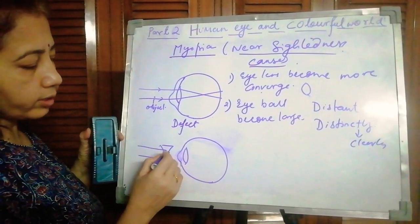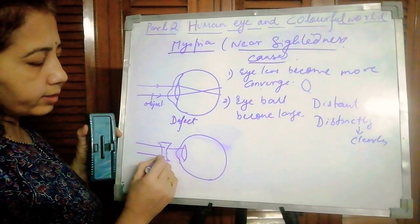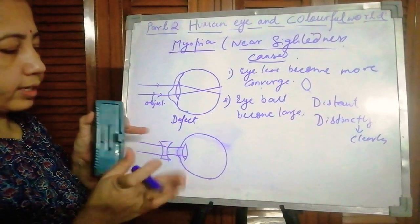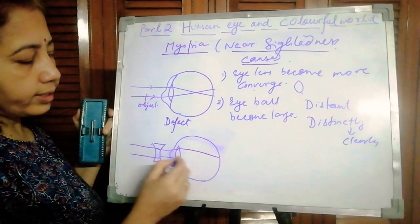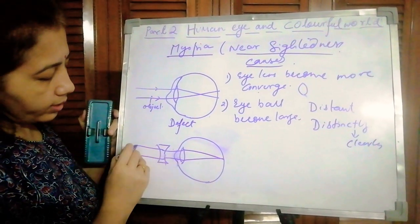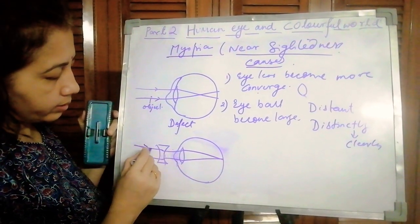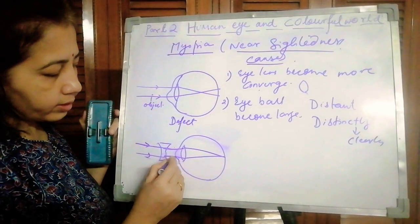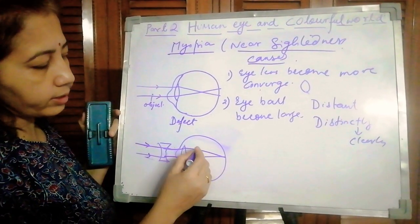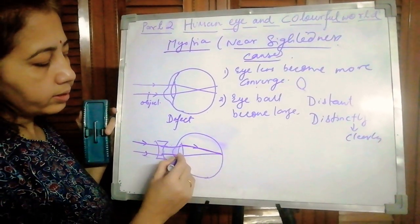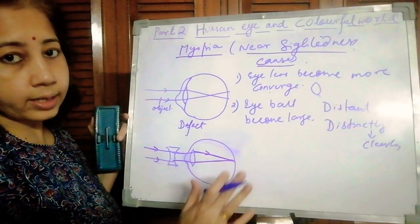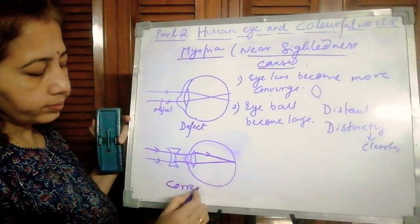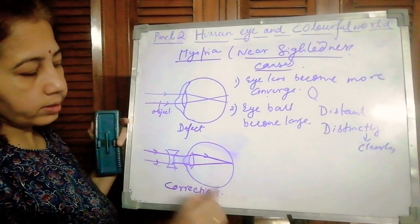The function of the concave lens is that it slightly diverges the rays which are coming in. It slightly diverges them, and then the original eye lens converges them again. The rays go straight on the scale — slightly bent first by the concave lens, then converged again. This is the correction of myopia.